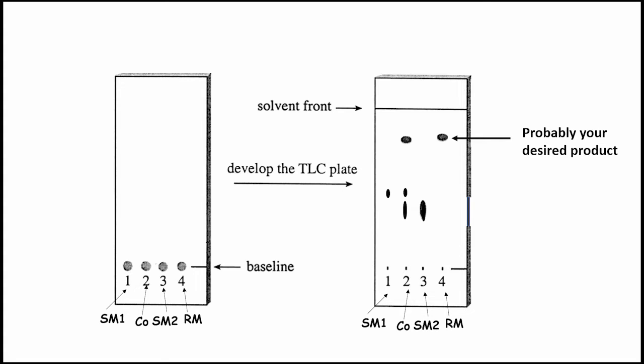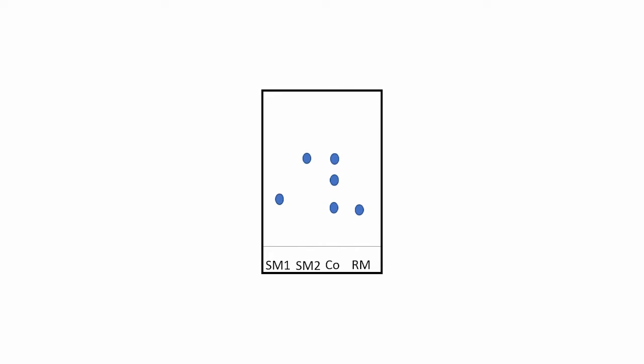And now, when you run the TLC in some mobile phase, for example, 50% ethyl acetate in hexane, we will see that these spots SM1 and SM2 will come at different levels in TLC. And if you see some new spots which is different from the level of SM1 and SM2 which means some new spot or product is forming in the reaction mixture spot.